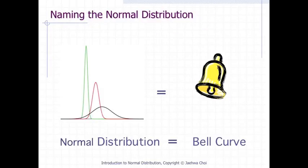The Normal Distribution is sometimes called the bell curve, although the tonal qualities of such a bell would be less than pleasing.